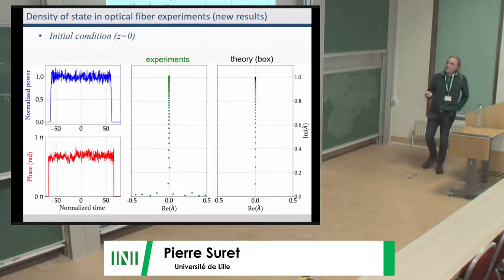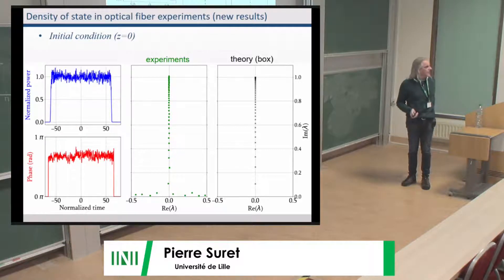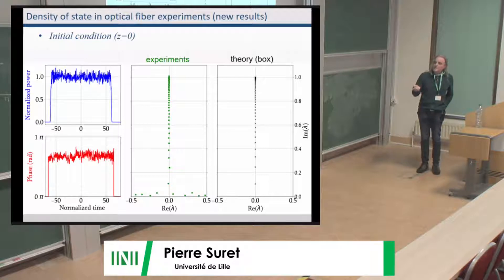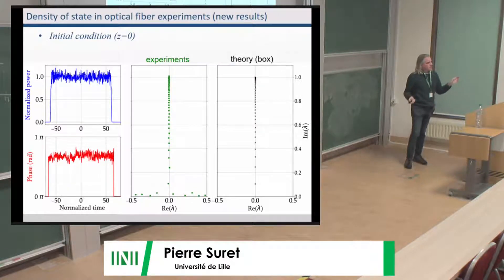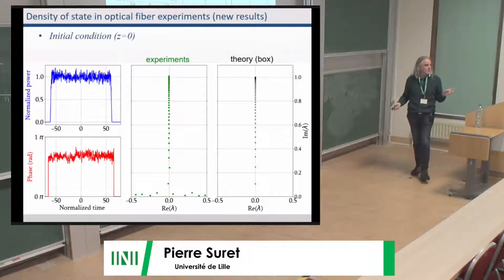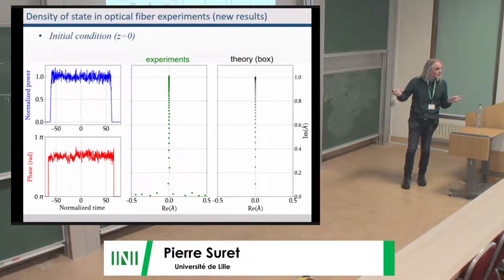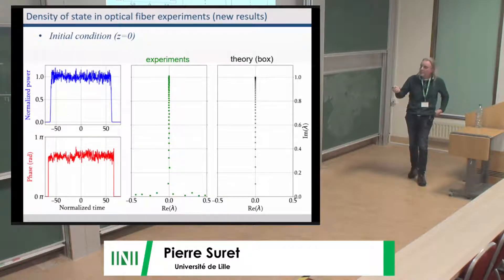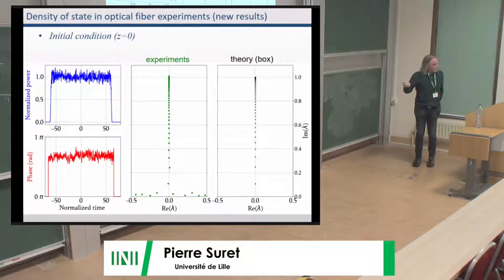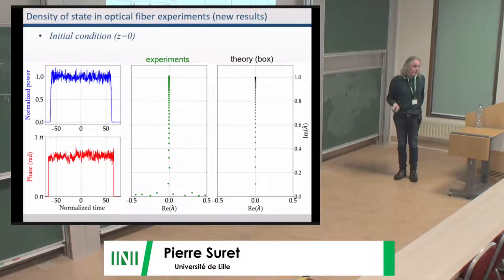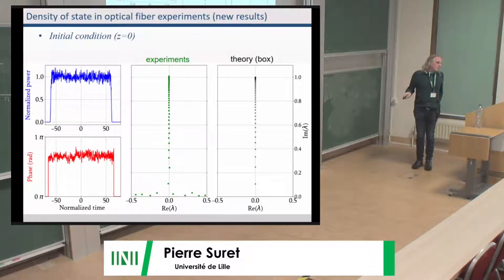Here is an example: we launch something approximately constant in the optical fiber and measure intensity and phase. The observation window is about 200 picoseconds due to measurement constraints, but the physics extends over 30 nanoseconds, so there is no edge effect in the observed region. We compute the IST with zero boundary conditions and compare to the theoretical IST of a box — you are very happy, but this is just your initial condition.